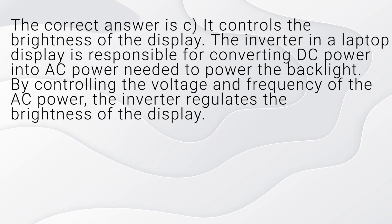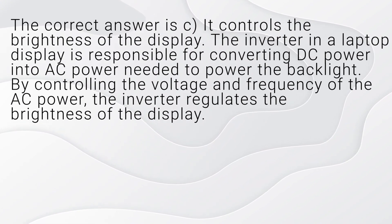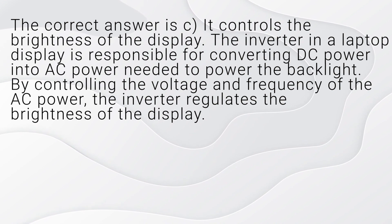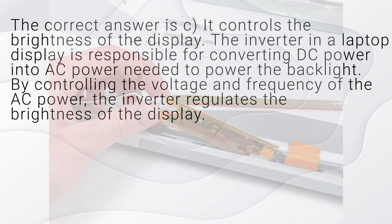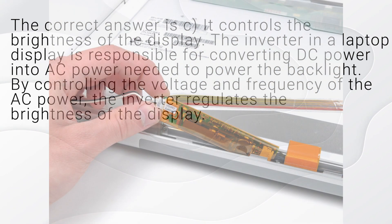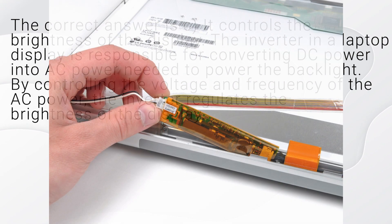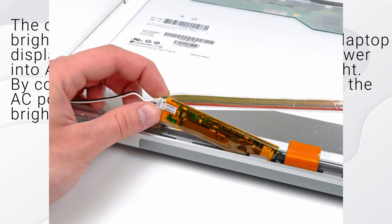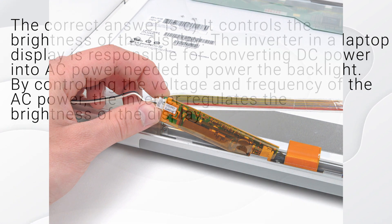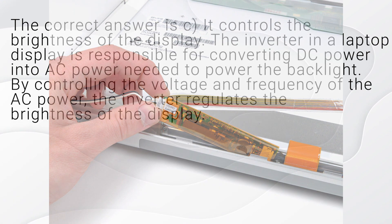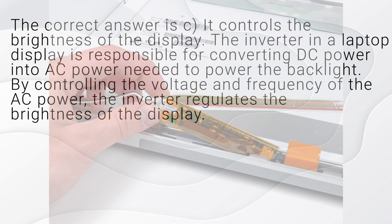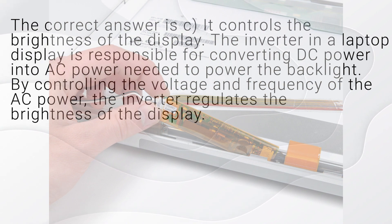The correct answer is A, it converts DC power to AC power. The inverter in a laptop display is responsible for converting DC power into AC power needed to power the backlight. By controlling the voltage and frequency of the AC power, the inverter regulates the brightness of the display.